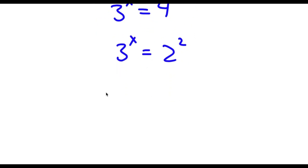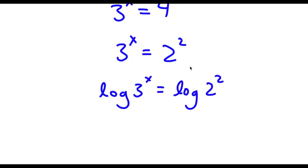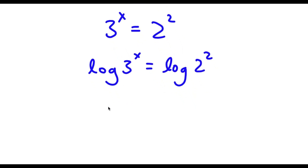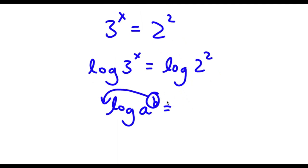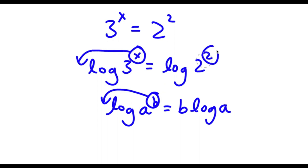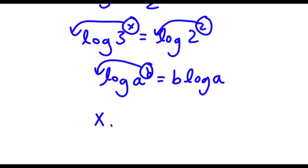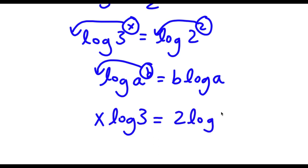Now, to solve this, I'm going to first take the log on both sides. So now I have log of 3 to the power of x is equal to log of 2 to the power of 2. If I have something in the form log a to the power of b, I can move this exponent b to the front of the logarithm — this equals b times log a. So I can move the x to the front and the 2 to the front, giving me x times log 3 is equal to 2 times log 2.